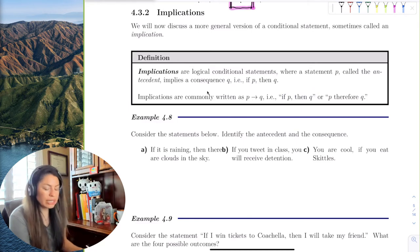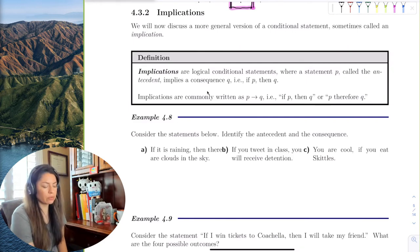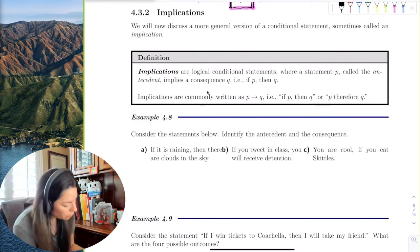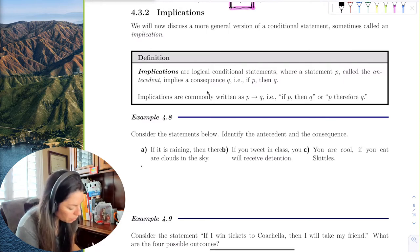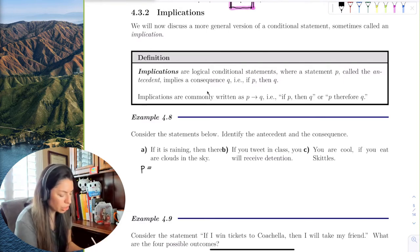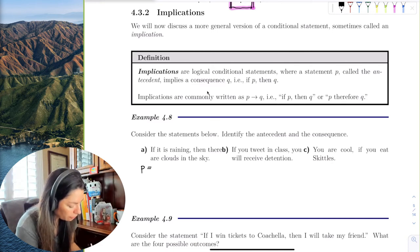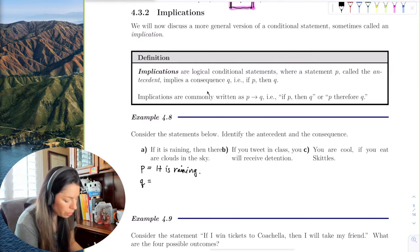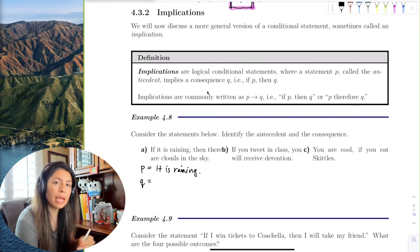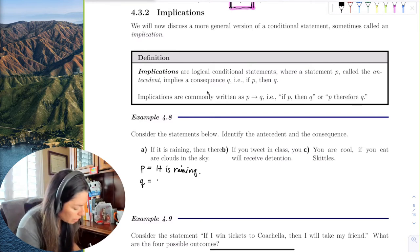Let's take some written statements and identify the antecedent and consequence. For example: 'If it is raining, then there are clouds in the sky.' The antecedent P is 'it is raining,' and the consequence Q is 'there are clouds in the sky.'